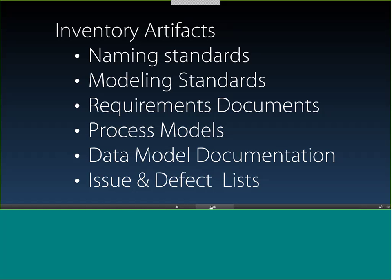In organizations without mature data governance, someone will say 'yes, we have naming standards' — send them to me — 'they're out on SharePoint' — point me to them — and then they can't find them. One of my tips is when I write up my findings, I mention that this project or organization has no naming standards, no modeling standards — none. If they actually do exist, someone will read that and go find the standards. If they don't actually exist, then no one will find them and the findings stand on their own.